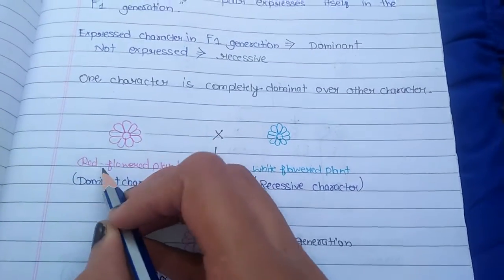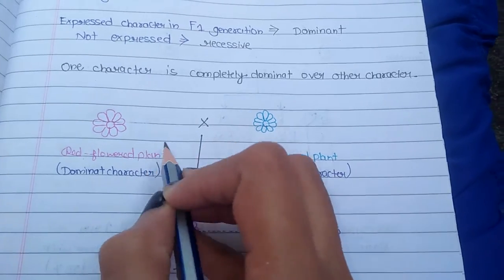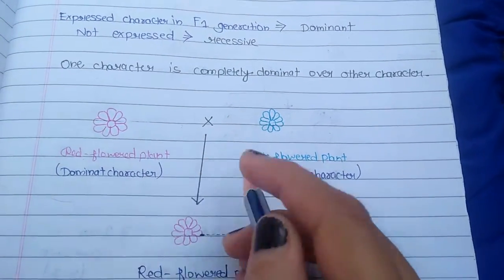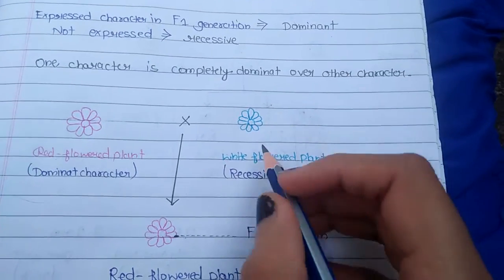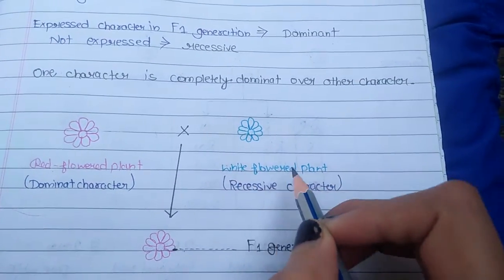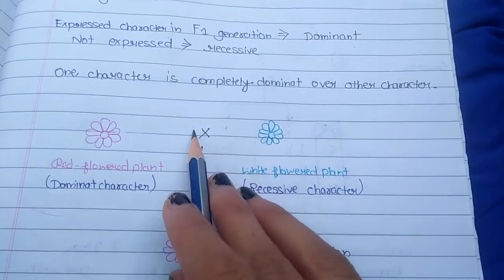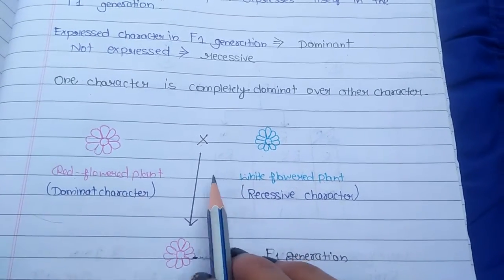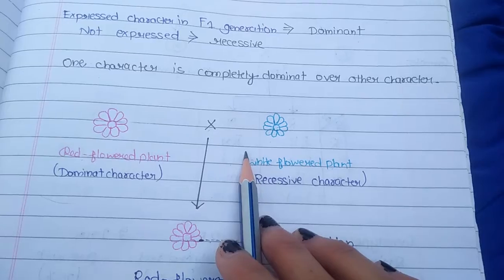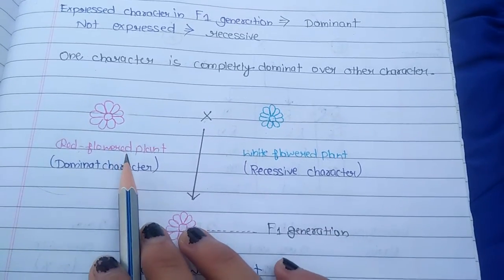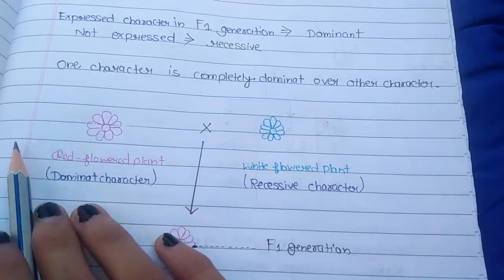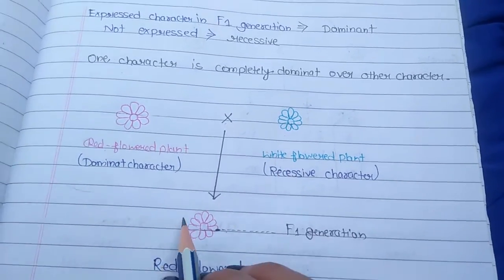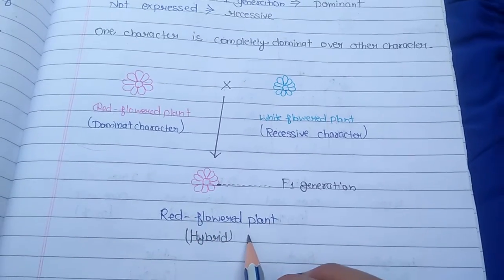First of all, this is a red flower plant and this is a white flower plant — I will draw white in blue. I have made a cross between them. Now this is a hybrid — when we mix and cross the characters, this is a red character and this is a white character, and now we mix them together.